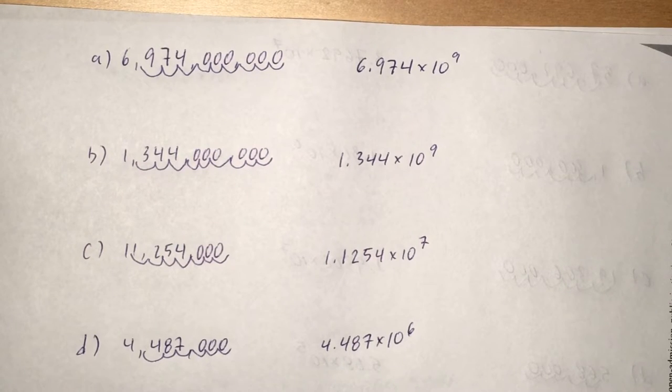So use the same problem-solving strategy for the rest of them. 1,344,000,000 converts to 1.344 times 10 to the 9th, again because we're moving the decimal point 9 places.